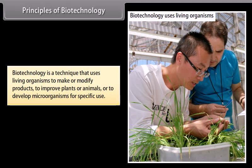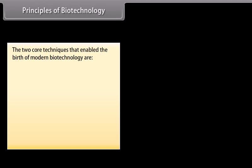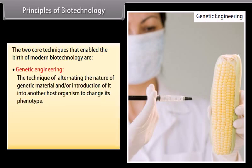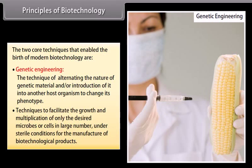Principles of biotechnology. Biotechnology is a technique that uses living organisms to make or modify products, to improve plants or animals, or to develop microorganisms for specific use. The two core techniques that enable the birth of modern biotechnology are: genetic engineering — the technique of altering the nature of genetic material and/or introduction of it into another host organism to change its phenotype; and techniques to facilitate the growth and multiplication of only the desired microbes or cells in large numbers under sterile conditions for the manufacture of biotechnological products.